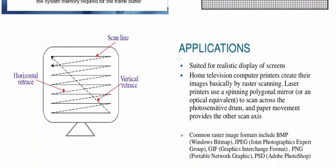Basically, a scan line works like this: suppose you need to read a letter like 'C'. The electron beam will go across, and when it reaches a point it starts scanning — it reads that point and collects it. After that it moves on, reading the next color in the next scan line, reading each horizontal row and then moving vertically, until finally the entire image is scanned. These dots form the scan lines.